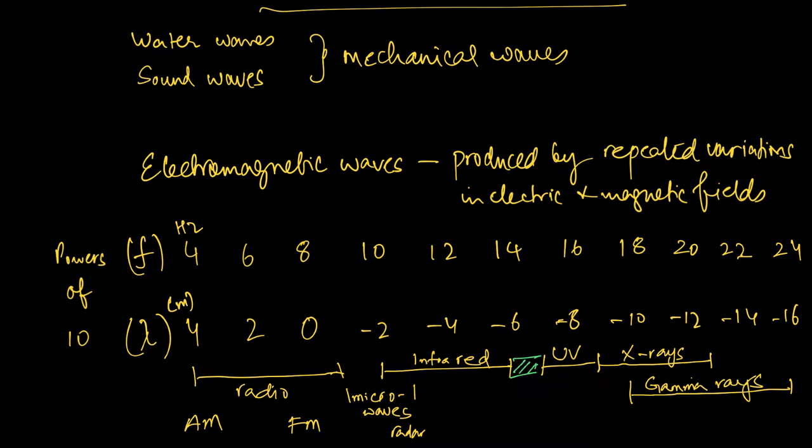This zone right here, that is visible light. Anything that a human being has ever seen has been between roughly 10 to the minus 6 to 10 to the minus 7 meter wavelength, or 10 to the 14 to 10 to the 15 hertz frequency range. Every work of art - that's all that the human eye can perceive.